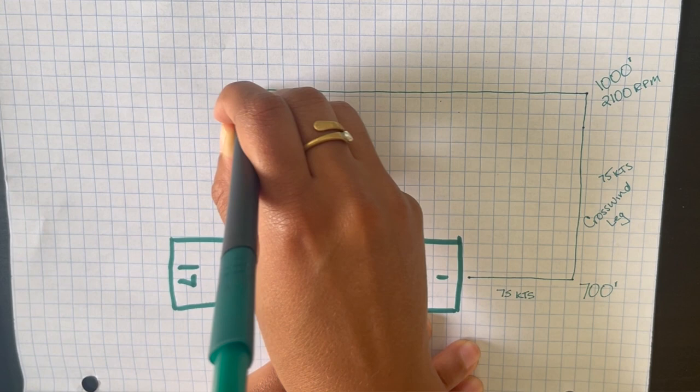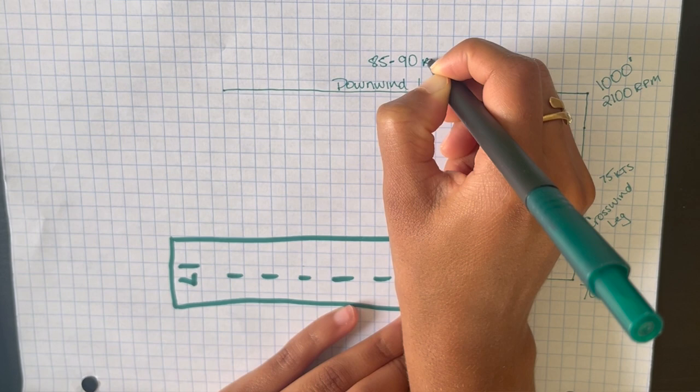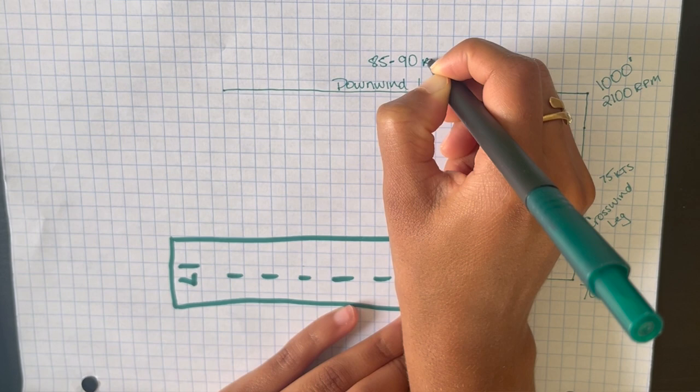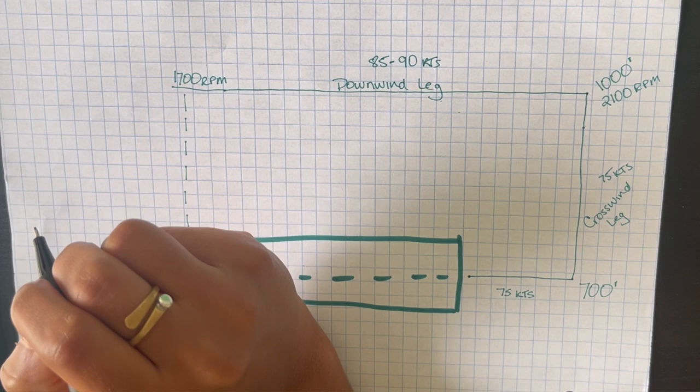You're going to take your next left turn onto your downwind leg. On this leg you will hold about 85 to 90 knots. Once you are abeam to the numbers, which means your wing is aligned with those numbers on the runway that you're going to land on, you are going to do a number of things.